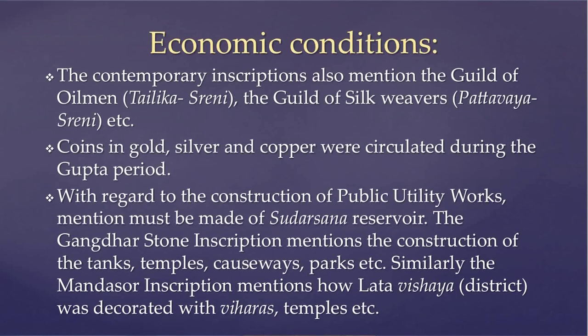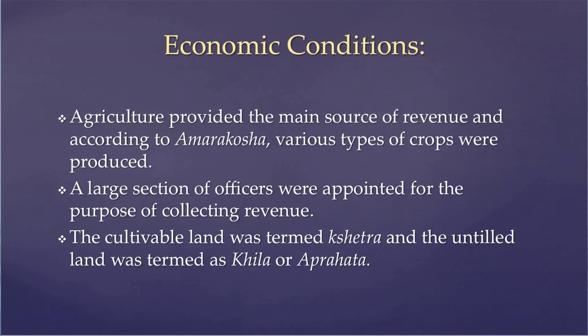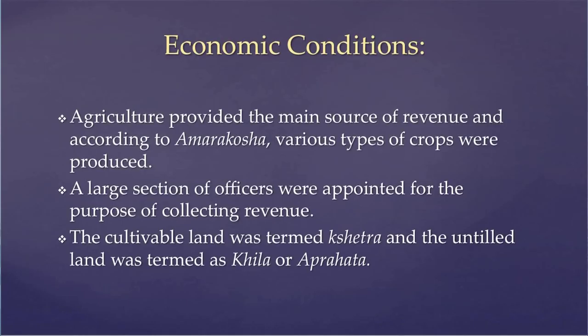Regarding public utility works, mention must be made of the Sudarsana reservoir, originally constructed during the time of Chandragupta. The Gandhar stone inscription talks of the construction of temples, tanks, causeways, and parks. The Mandasaur inscription mentions how Lata Vishaya (meaning districts) was decorated with viharas and temples. Besides trade, agriculture provided the backbone of the Gupta economy. Amarakosha mentions various types of crops produced during the Gupta period. Cultivable lands were termed Shretra, and untilled or uncultivable land was termed Khila or Abrahata. Amarakosha also mentions 12 types of soils or lands.